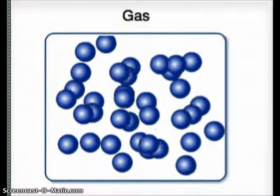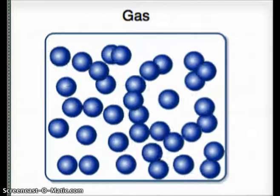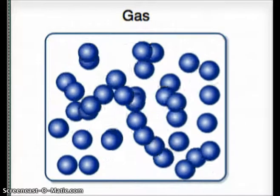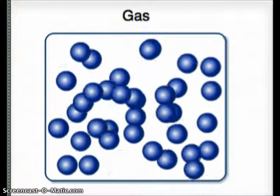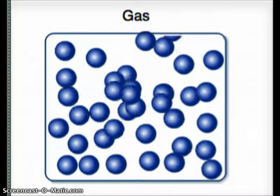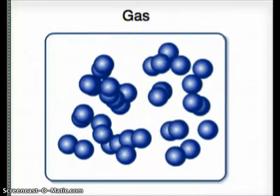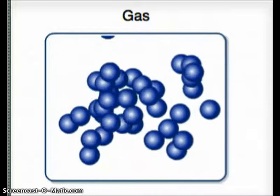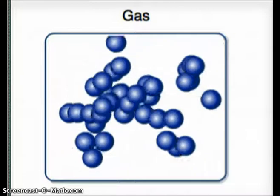So, it is this kinetic molecular theory, the movement of the molecules, that creates the pressure of the gas. Because as you increase the collisions between the molecules and the surface that they're being housed in, the more pressure the gas is under. And if you can reduce that pressure, either by changing the shape and increasing the volume of the container, or by decreasing the number of molecules present, you can change the pressure.